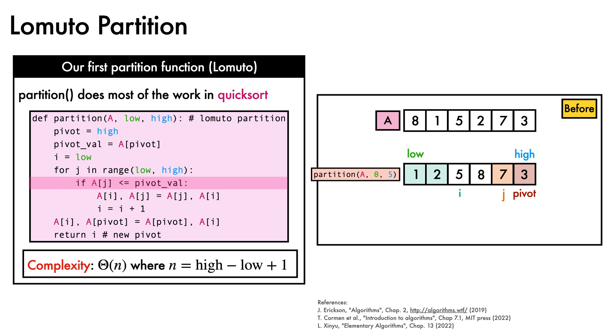We check if aj is less than the pivot value, which it isn't, since 7 is greater than 3. So our for loop exits, and we swap the elements at i and the pivot. Finally, we return i, which becomes the new pivot. Note that everything to the left of the pivot is less than or equal to 3, and everything to the right of the pivot is greater than or equal to 3. We are done.